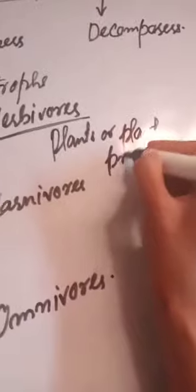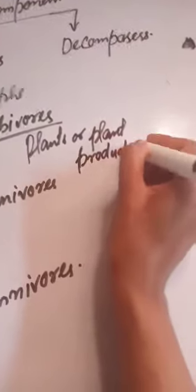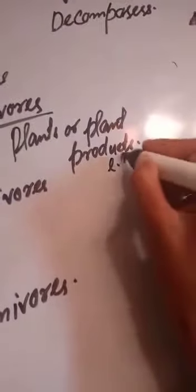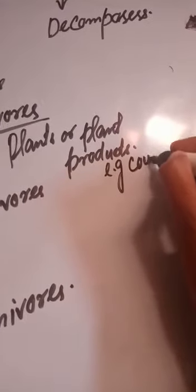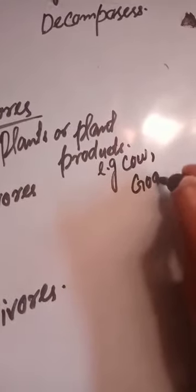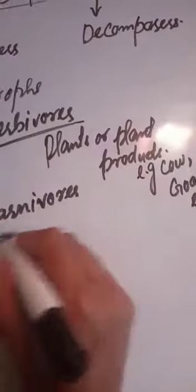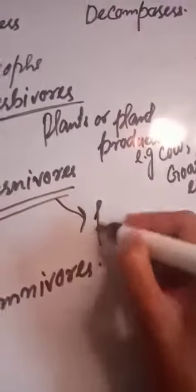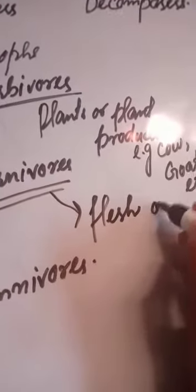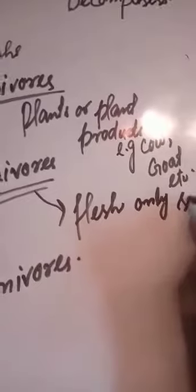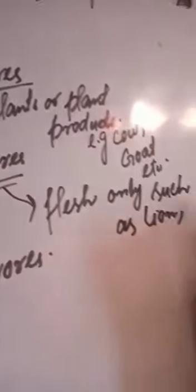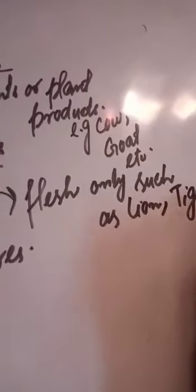Omnivores - these are those animals which eat both plants and its products and animals. For example, man, bear, etc.